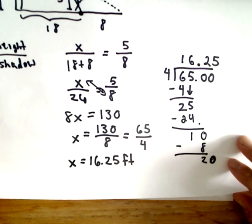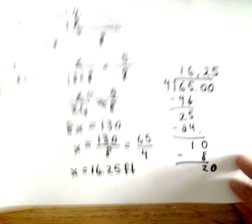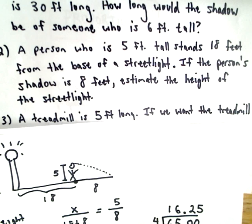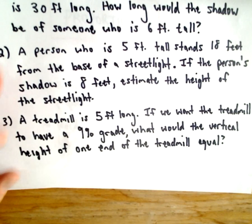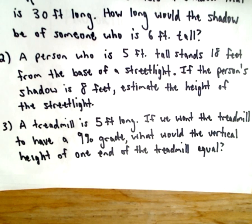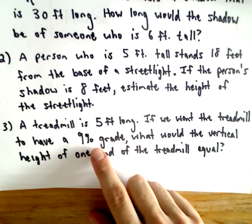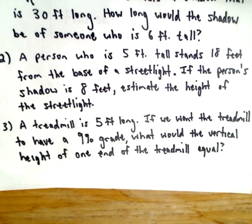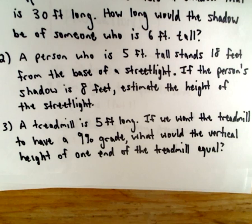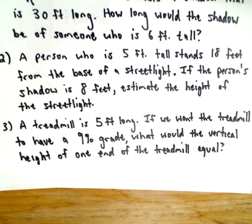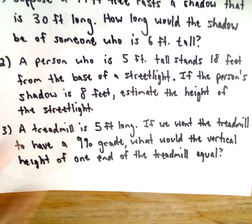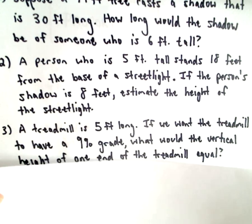I think I've got everything set up there correctly. Last but not least, let's do our little treadmill problem. A treadmill is 5 feet long. And if we want the treadmill to have a 9% grade, what would the vertical height of one end of the treadmill equal? This may be something... when we talk about a grade or a gradient, it's telling us how steep the hill is.